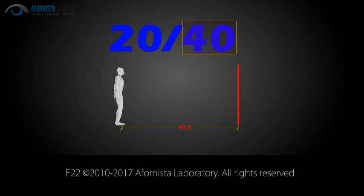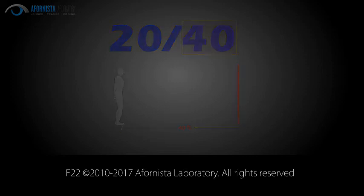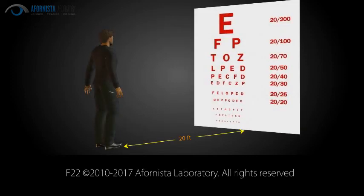The smaller the letters you can read on the chart from 20 feet away, the better your visual acuity is. Your visual acuity is usually measured with and without corrective measures to verify that the prescription is sufficient.